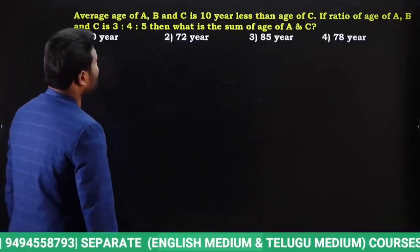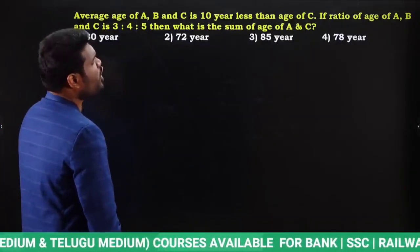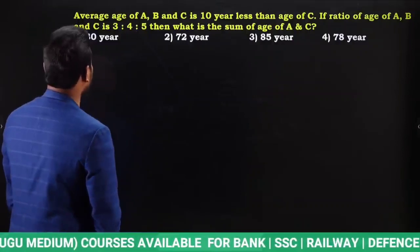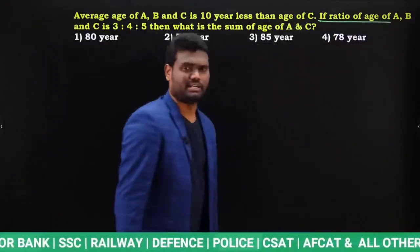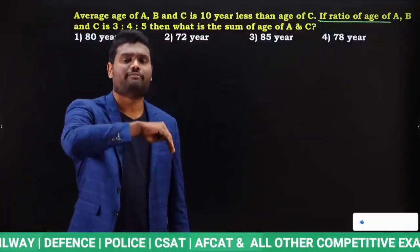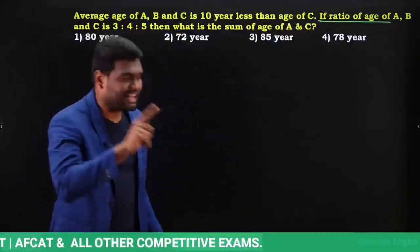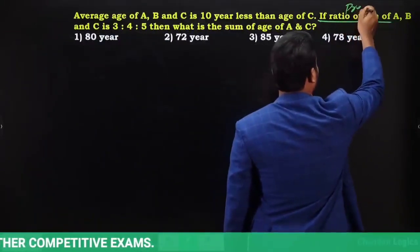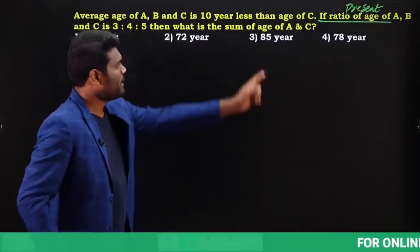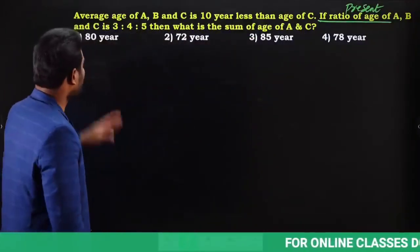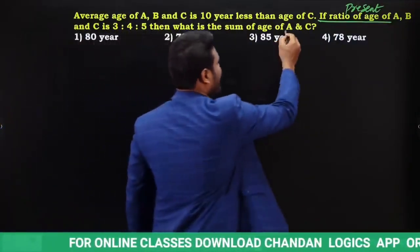Next question: the average age of A, B, C is 10 years less than the age of C. The ratio of ages of A, B, C is 3:4:5. Note that since nothing specific was mentioned — no 'after 5 years' or '3 years ago' — you take it as present age. We are supposed to find the sum of ages of A and C.